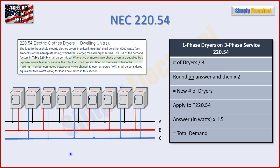The code requires you to distribute dryers as evenly as possible across phases. I've developed a formula to make this easy: take the number of dryers, divide by three, round up if needed, then multiply by two — that gives you a new number of dryers. You then apply that to table 220.54 as usual to get a wattage. But because we converted to a single phase scenario, once we get that wattage we must convert back to three phase by multiplying by 1.5.